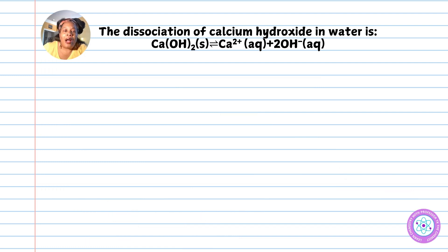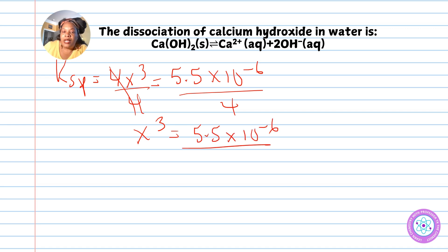So our Ksp equals 4x³ = 5.5×10⁻⁶. To solve for x, the calcium ion concentration, we divide both sides by 4. We get x³ = 5.5×10⁻⁶ divided by 4.